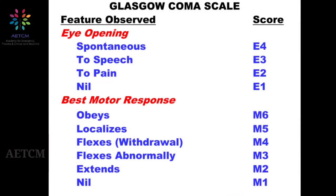The Glasgow Coma Scale scores up to 15 and has three basic parameters. E is for eye opening: spontaneous is E4, to speech is E3, to pain is E2, and no response is E1. For motor score: obeys a verbal command is M6, localizes pain is M5, withdrawal to stimulus is M4, abnormal flexion is M3, extends to pain is M2, and no response is M1.